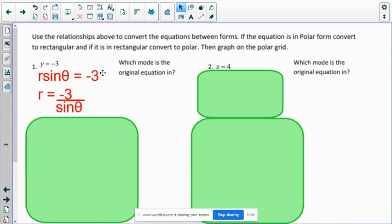So now we want you to graph it. So if you think about what is y equals negative three look like in rectangular world, I hope you remember that it's a horizontal line going straight across.